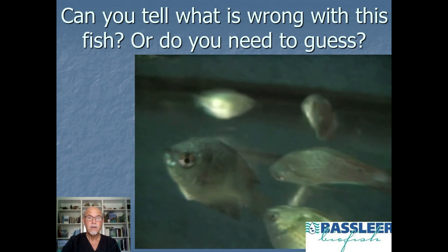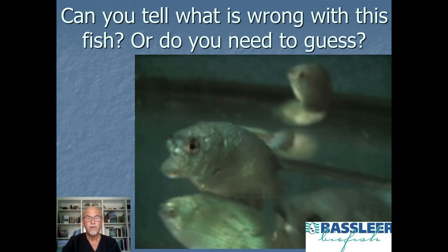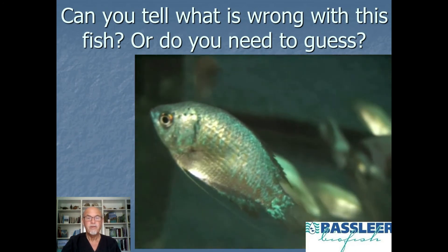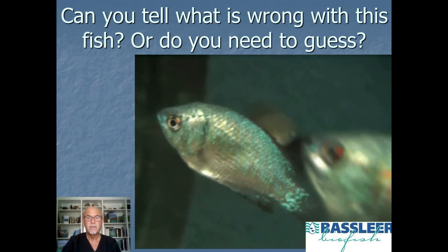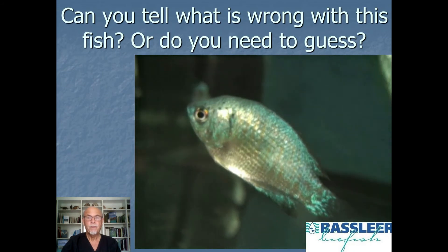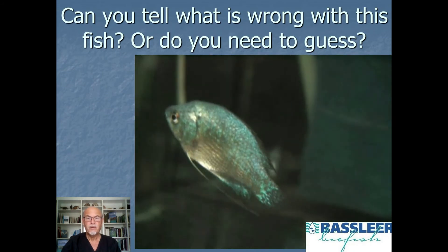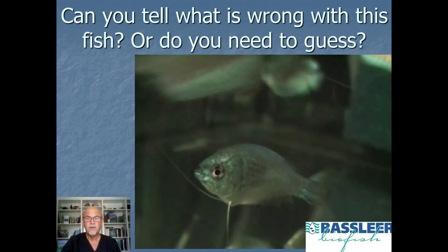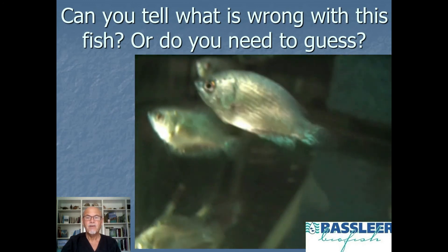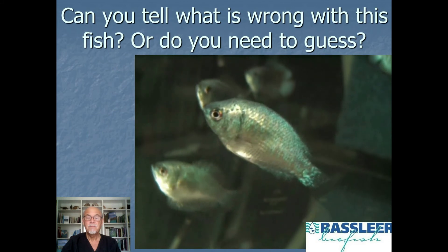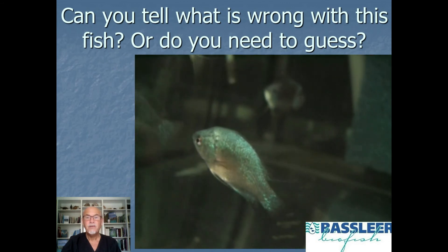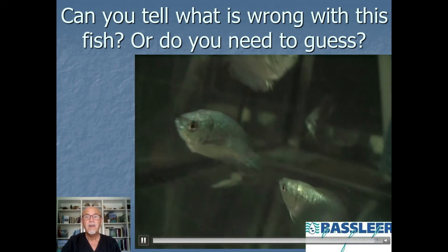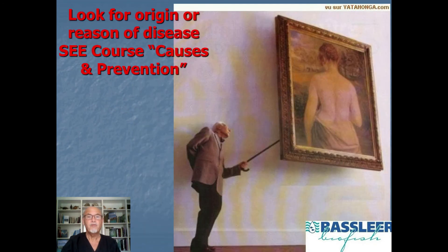Can you tell what is wrong with this fish? This colissa blue is fraying the fins and having bad respiration. You can see it's clamping and getting skinny. Well, if you look at this, you have to guess. Making guesses in fish diseases is not the best choice.